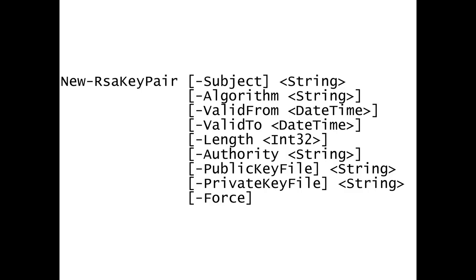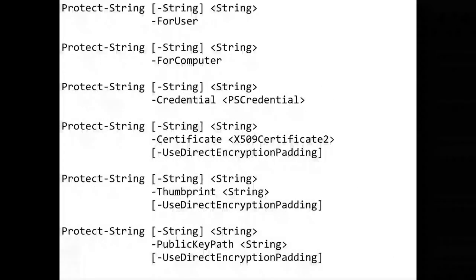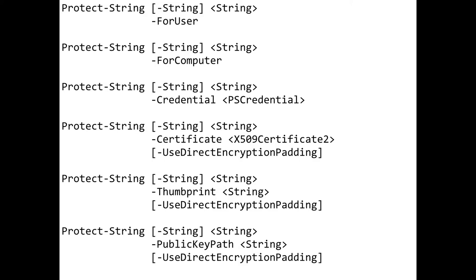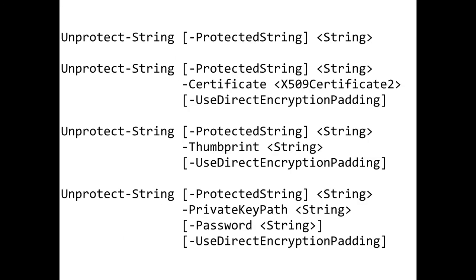Carbon has great functions for doing this. We have a New-RSAKeyPair function which will generate the private and public key pair for you. It requires the Windows SDK because it uses MakeCert and PVK2PFX executables. If anybody knows of any Win32 APIs or .NET APIs that will generate public and private key pairs, come talk to me — I would love to not have to depend on the Windows SDK. Carbon also has a Protect-String function for encrypting. It will encrypt with the DPAPI, which means you don't need to manage the keys — Windows manages them for you. You can encrypt at the user level so only that user can decrypt it, at the computer level so anybody on that computer can decrypt it, or give it a certificate and private key path and it will encrypt with that key. There are corresponding Unprotect functions to decrypt.